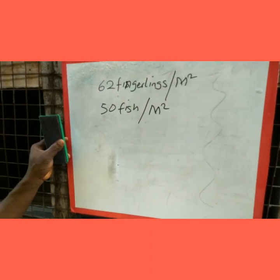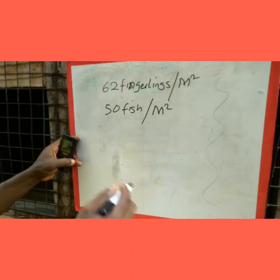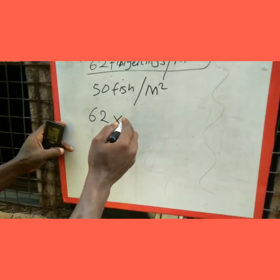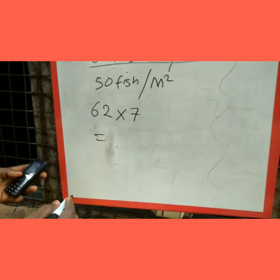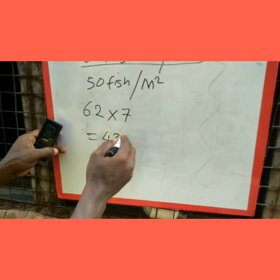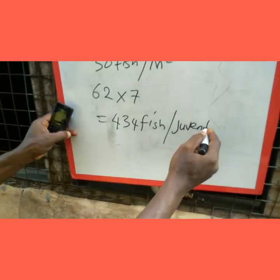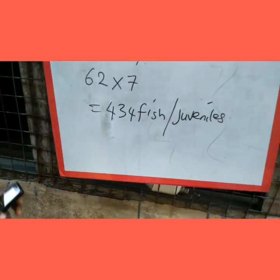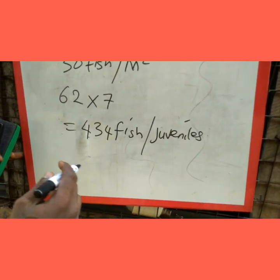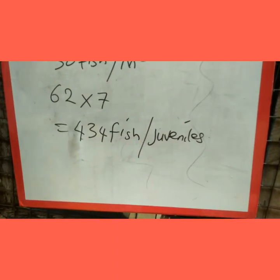The area of our pond is 7 square meters. I want to stock juveniles, so how many juveniles can I stock here? I'll take 62 times 7, which equals 434 fish. So we have 434 juveniles that I can stock in this pond.